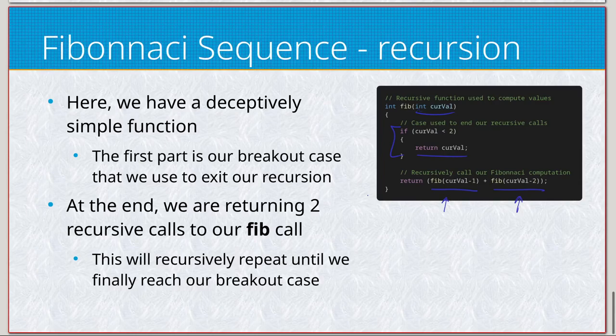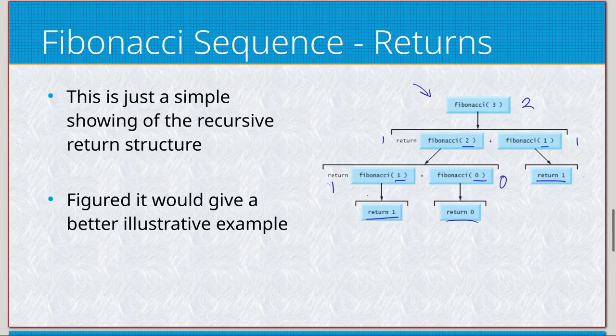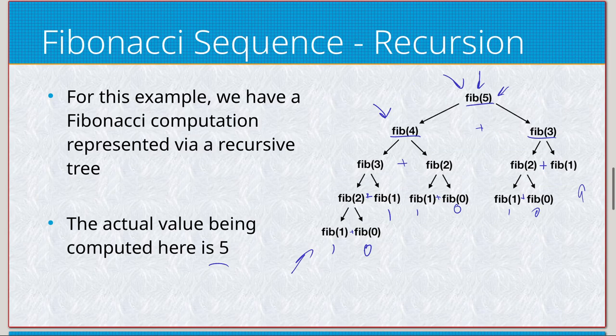You would want to approach the Fibonacci sequence in an iterative approach because this is going to become a very, very unbalanced tree. You can kind of see that here it's already starting to get fairly unbalanced. The left side is far deeper than the right side and it will only continue to get further unbalanced and that means it would be a very, very inefficient approach. The iterative approach doesn't have this issue.